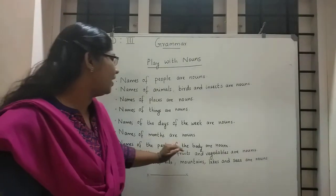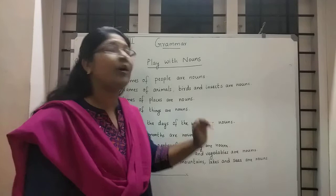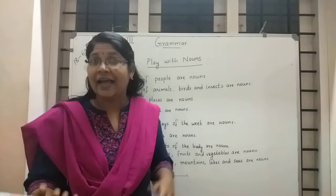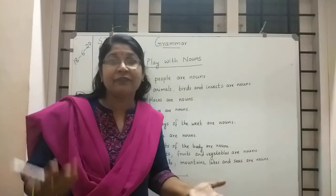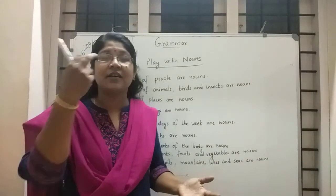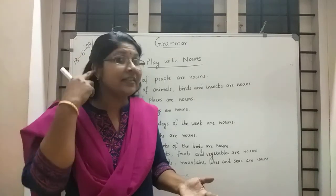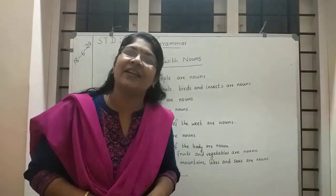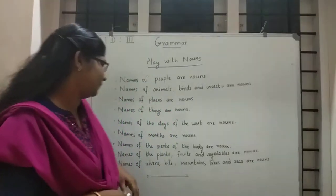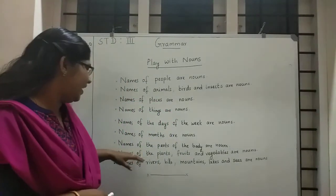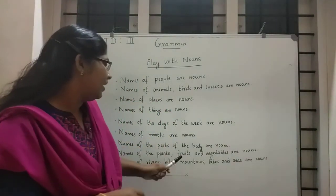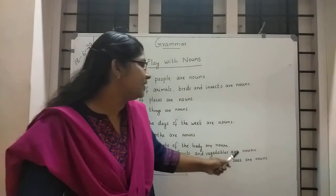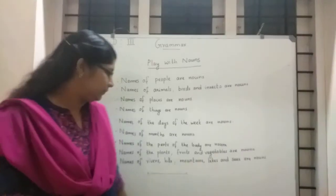Names of the parts of your body are also noun: hand, leg, fingers, nose, eyes, ears, mouth — these are also nouns. Names of plants, fruits, and vegetables are also noun.